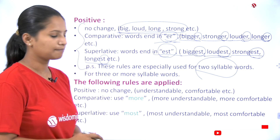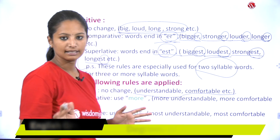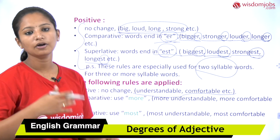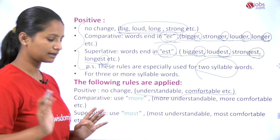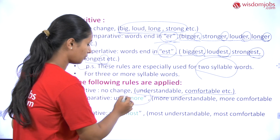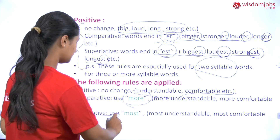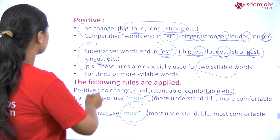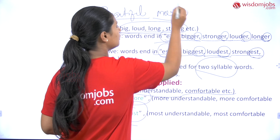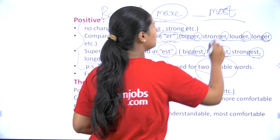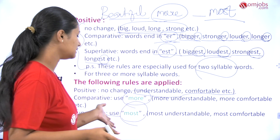For words with three or more syllables, such as 'understandable' or 'comfortable', we follow different rules. In positive degree, there is no change. In comparative degree, we use 'more', and in superlative degree, we use 'most'. For example: beautiful, more beautiful, most beautiful. These rules apply only to words with three or more syllables.